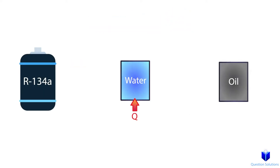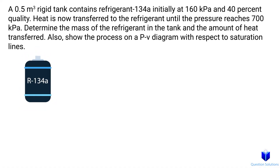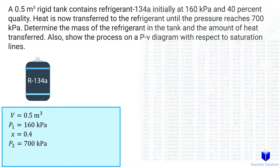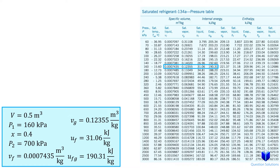Now let's go through some examples. In this question, we have a tank that contains refrigerant R134a. Heat is then added and we need to figure out the mass of the refrigerant in the tank and the amount of heat transferred. We also need to draw a pressure versus specific volume diagram. The tank has a volume of 0.5 cubic meters, initial pressure is 160 kilopascals, quality is 40%, and after heat is transferred the final pressure is 700 kilopascals. We can look at the pressure table for R134a to get the specific volume and internal energy values at 160 kilopascals — the saturated liquid and vapor specific volume, the saturated liquid internal energy, and the evaporation internal energy.